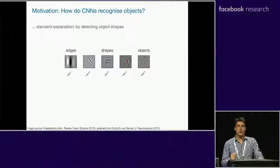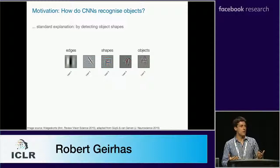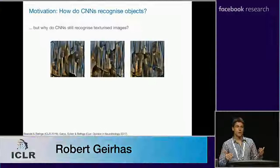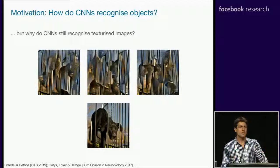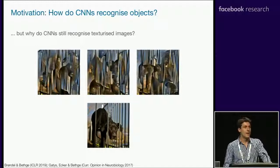This explanation is super intuitive and seems to make sense to us as humans, but it's also deeply unsatisfying in a way. It's unsatisfying because it predicts that if the shape is missing in an image, a CNN should fail to recognize the image — and this is not what we actually find in practice. If you look at these images, they more or less look like garbage to us, but CNNs will have no trouble identifying the dog. This is just a texturized version of the dog image, and this is really a challenge for the shape explanation of CNN object recognition.